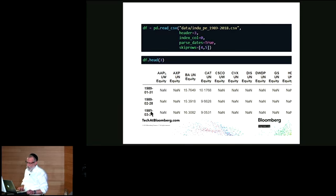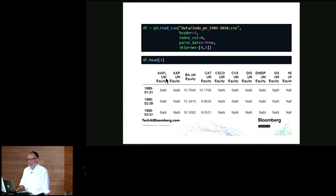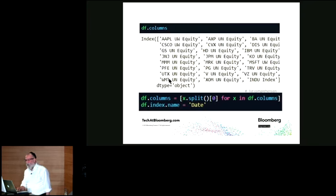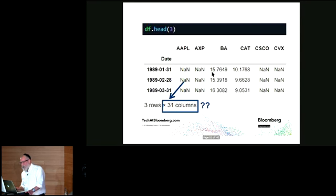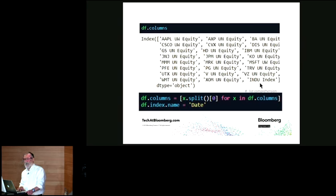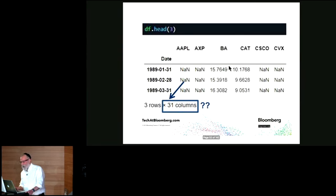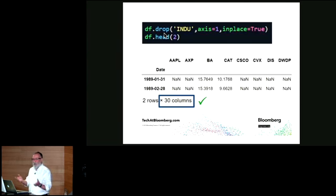If I want to access a column by key, I don't want to type the full string like 'ticker symbol plus primary exchange plus equity.' The columns are just strings in an index object, which is iterable, so I use a list comprehension to split out the first token of each string — now I just have the ticker symbol. I also notice I have 31 columns instead of 30. Looking at the index, the last object is the index itself, not a stock. I use the DataFrame's drop method to remove that column, leaving me with 30 stocks.